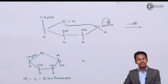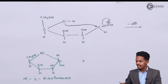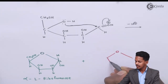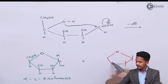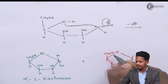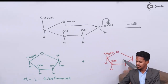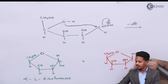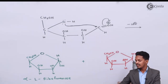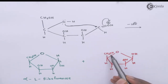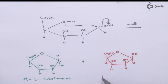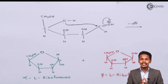A second anomer can also form. In this structure, the OH and CH₂OH groups are in a different relative position — they are cis to each other — and this anomer is called beta-L-ribofuranose. This is how we convert the Fischer projection formula of L-ribose into the Haworth projection formula.